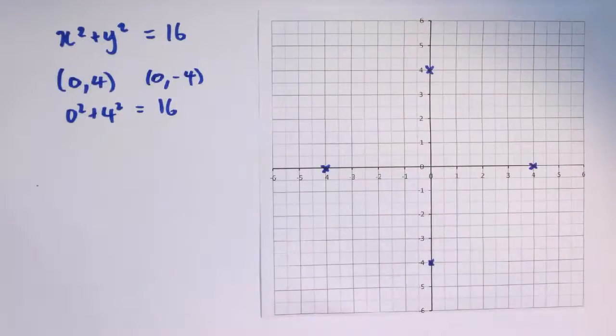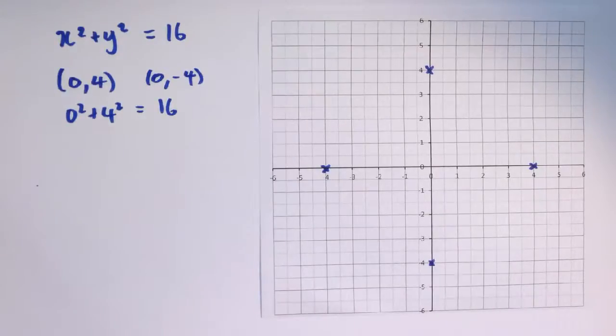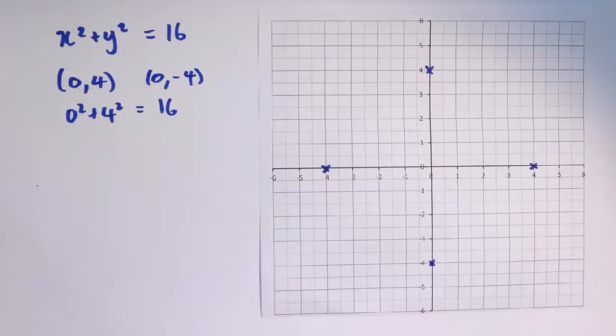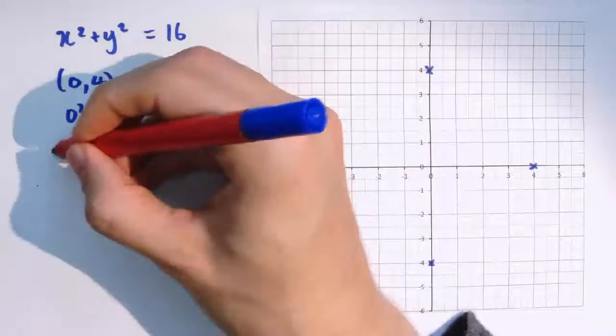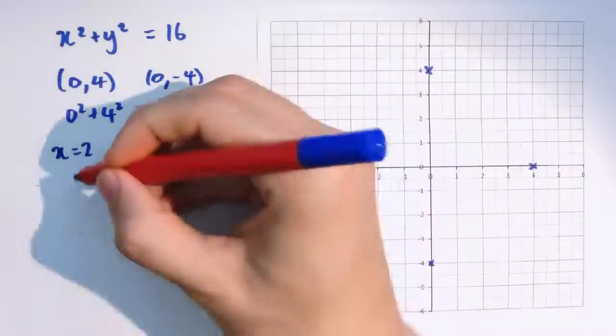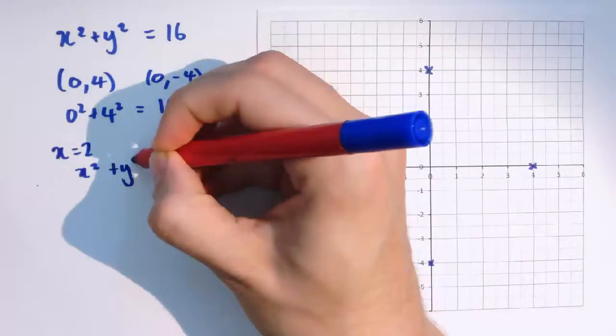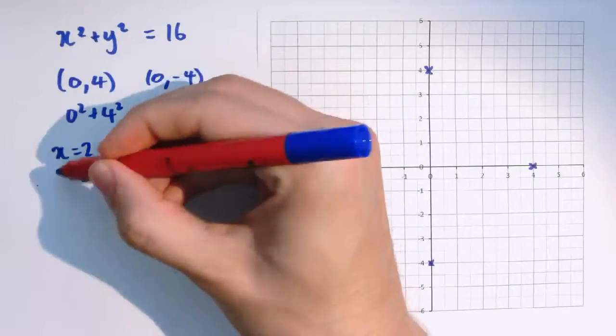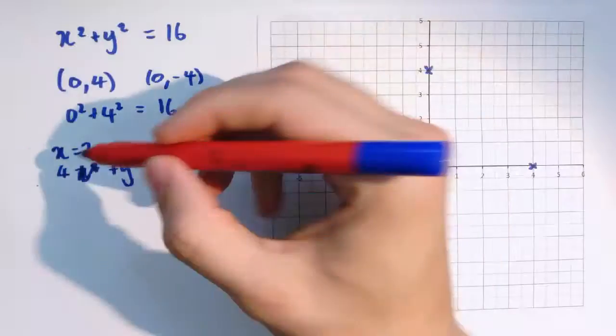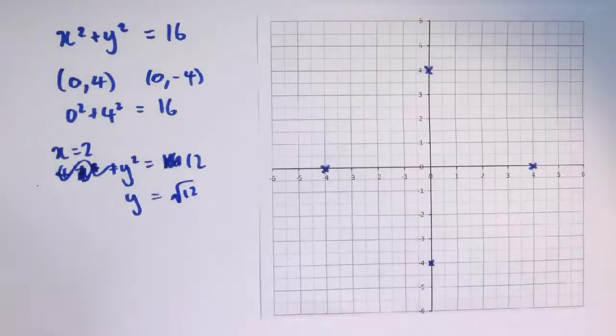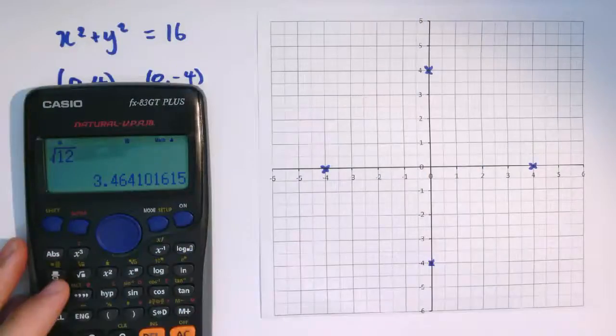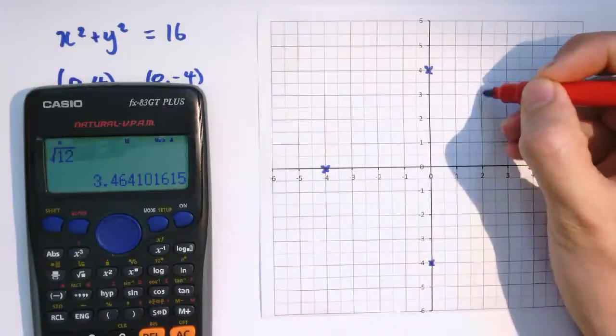At this point, we actually don't know what this looks like. It's quite hard to find any more exact points that this graph goes through. So I might have to just pick a value, maybe like pick x equals 2 and see what happens. So at x equals 2, I'd have 4 plus y squared equals 16. That means that y squared is 12. So y is the square root of 12. Putting that into the calculator, we see that y would be about 3.46.